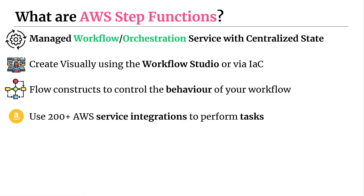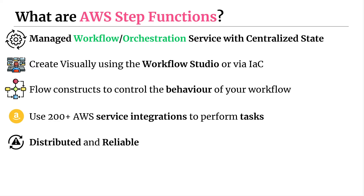Since Step Functions operate on top of the AWS network, they are distributed and reliable. Distributed in the sense that there are multiple different machines processing the tasks, all managed by the Step Function service itself. In terms of reliability, if an availability zone goes down due to some natural disaster or weather incident, then instances in another availability zone will automatically start performing your work. So they're reliable in the sense that you're protected from infrastructure outages, and that is all handled by AWS for you.